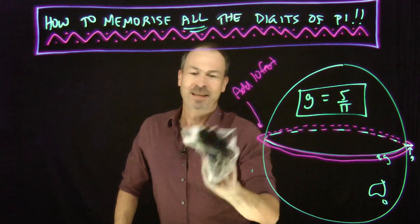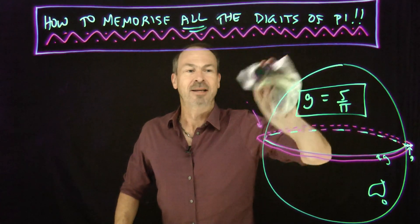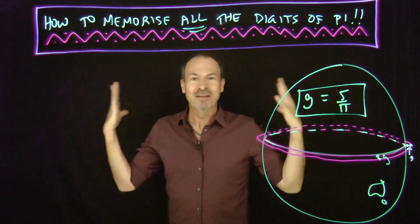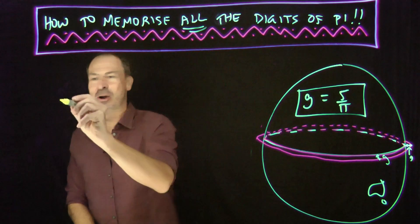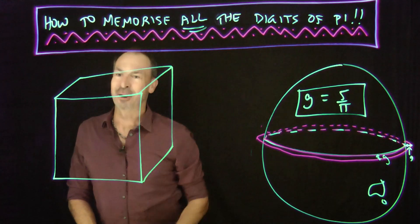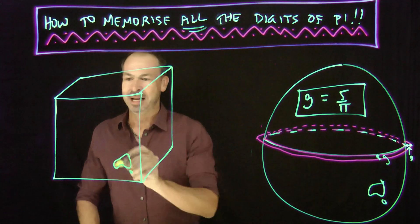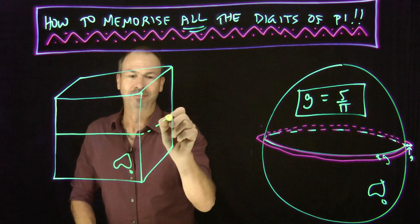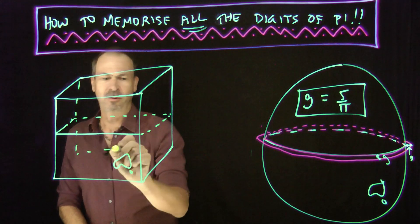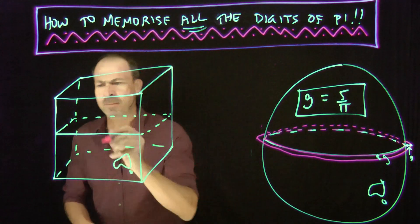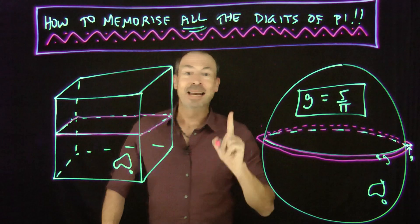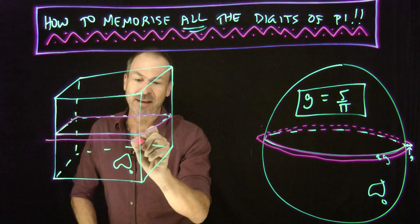Imagine the earth wasn't actually spherical. Suppose it wasn't a basic sphere — no one ever seems to imagine cubical planets, so let's imagine the earth was a cube. Let's do the same thing: here's the cubical earth, here's its equator, wrap a rope around the earth's equator, then add 10 feet like before, and you'll get a little bit of a gap.